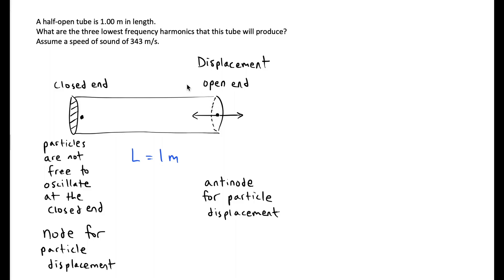So this is going to be a node for particle displacement. This concept sets up a wave idea where we're going to have no displacement on the left, but we'll have full displacement at the open end. This only represents one quarter of a complete cycle of the wave, though.